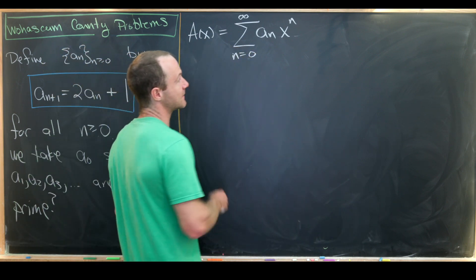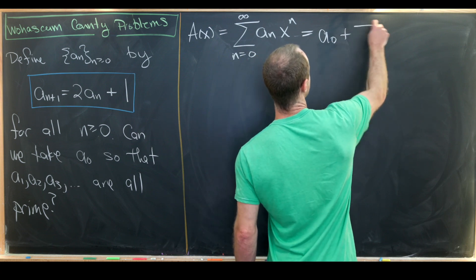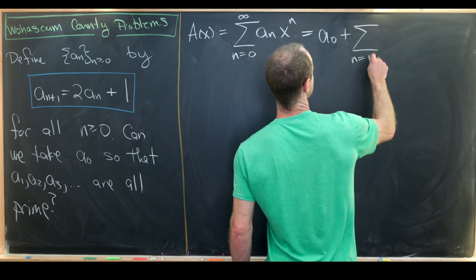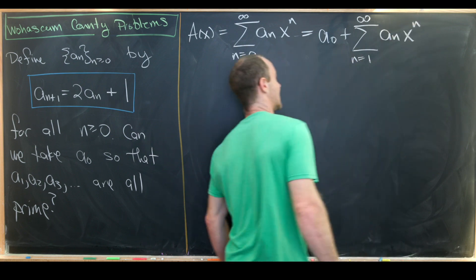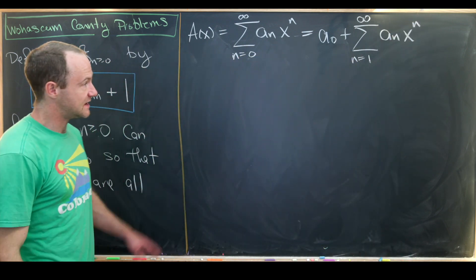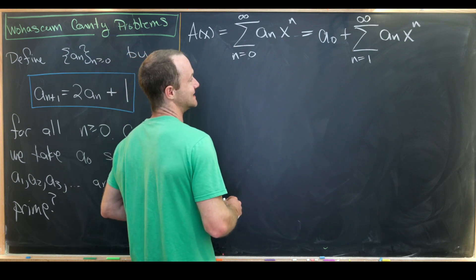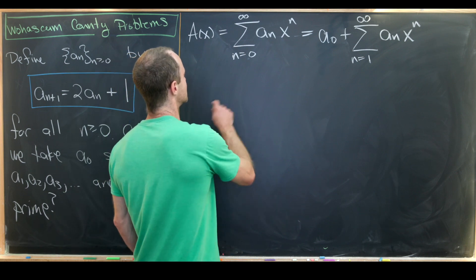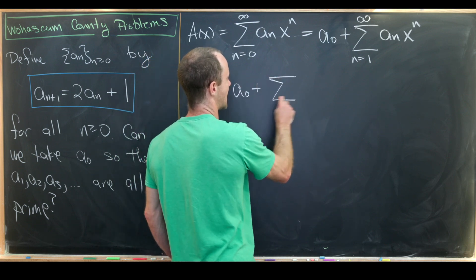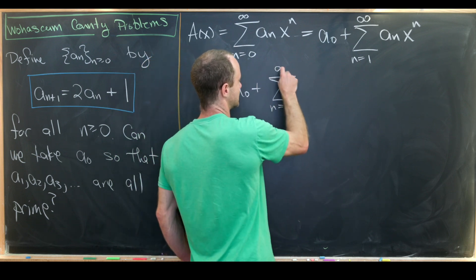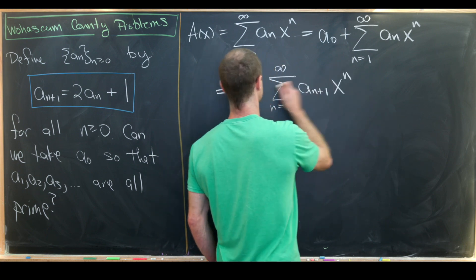So let's set a(x) equal to the sum as n goes from zero to infinity of a_n x^n. This is the generating function for our sequence. Let's pull out the first (zeroth) term, giving us a_0, then the sum as n goes from one to infinity of a_n x^n. Then re-index that sum to start at zero: a_0 plus the sum as n goes from zero to infinity of a_{n+1} x^{n+1}.